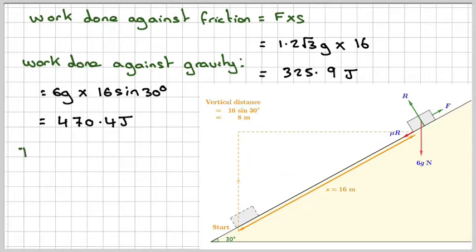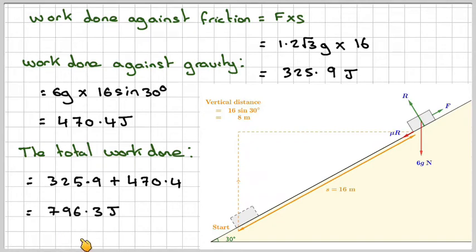So therefore the total work done is going to be 325.9 plus 470.4 which is going to be 796.3 joules or 796 joules to 3 significant figures.